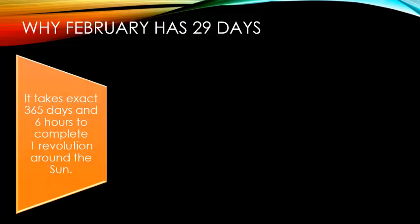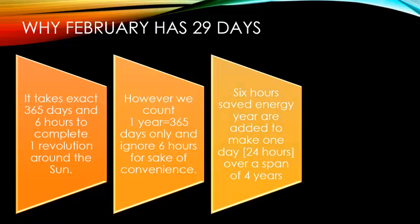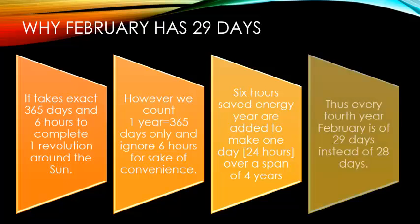Why does February have 29 days? It takes exactly 365 days and 6 hours to complete one revolution around the sun. However, we count 1 year as 365 days only and ignore 6 hours for sake of convenience. The 6 hours saved each year are added to make 1 day of 24 hours over a span of 4 years.